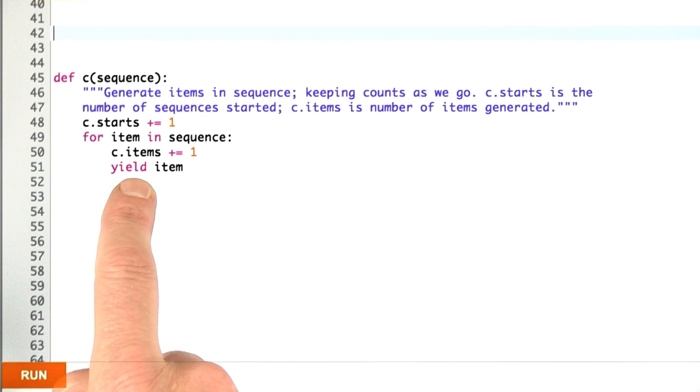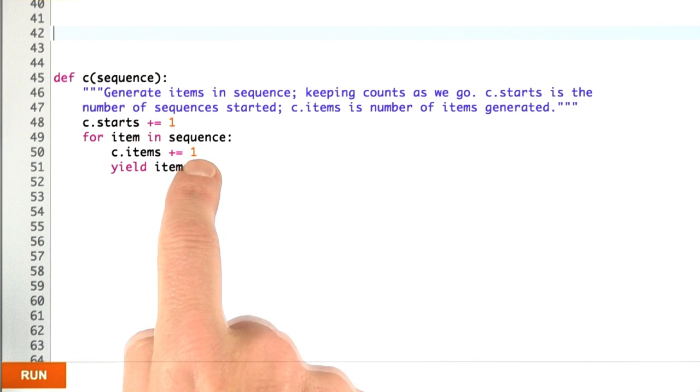The generator function will be returned, and as part of the for protocol, we'll call that generator function each time we want the next item in the sequence. And each time we do that, our count of items will be incremented. When we're done, when the for loop doesn't want any more, we'll stop incrementing.